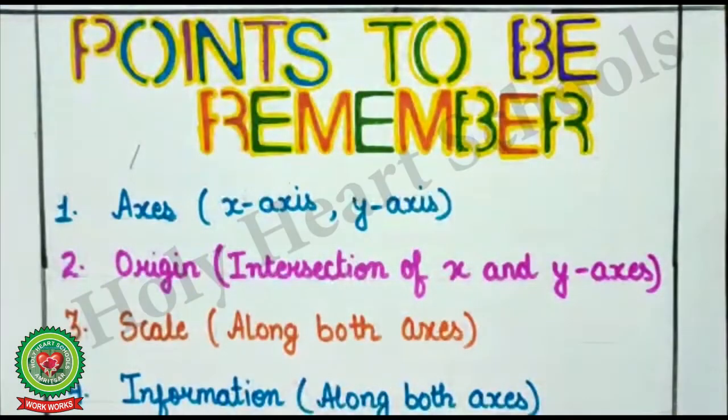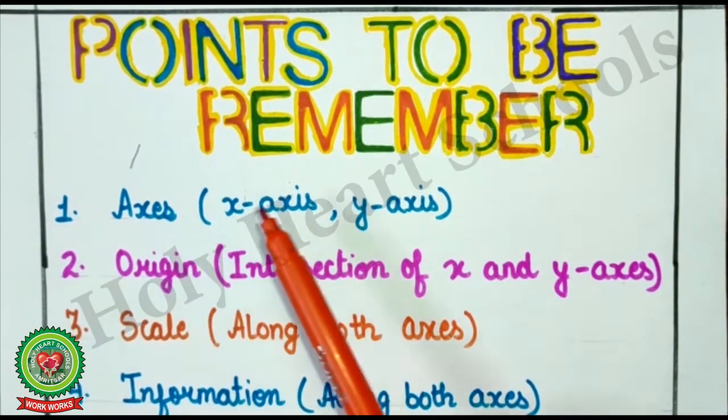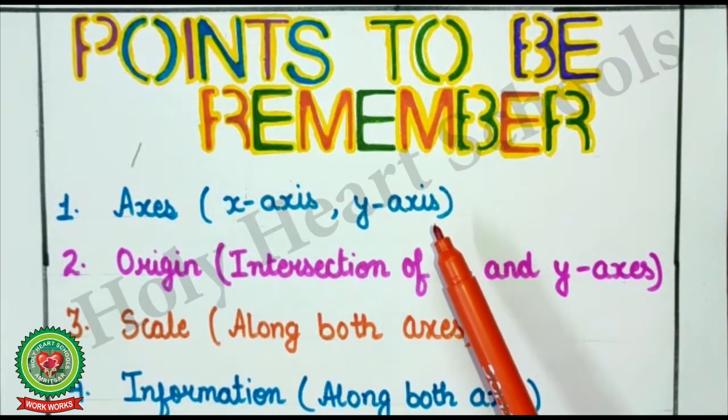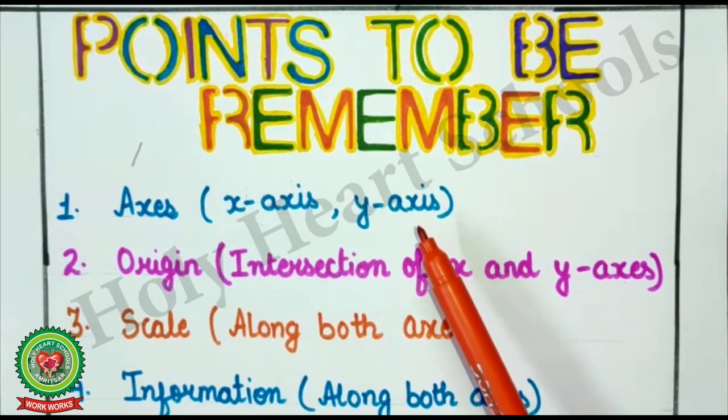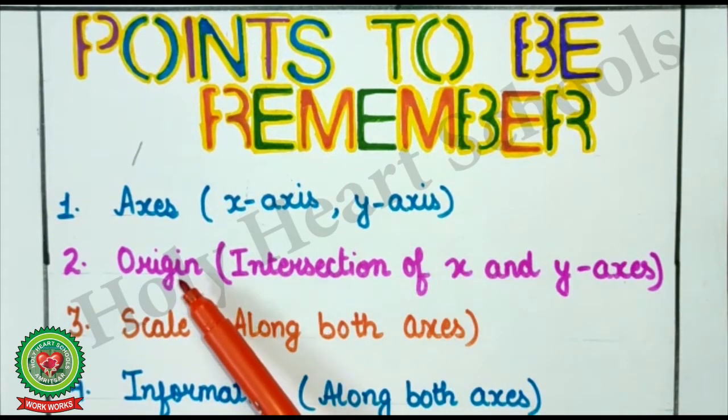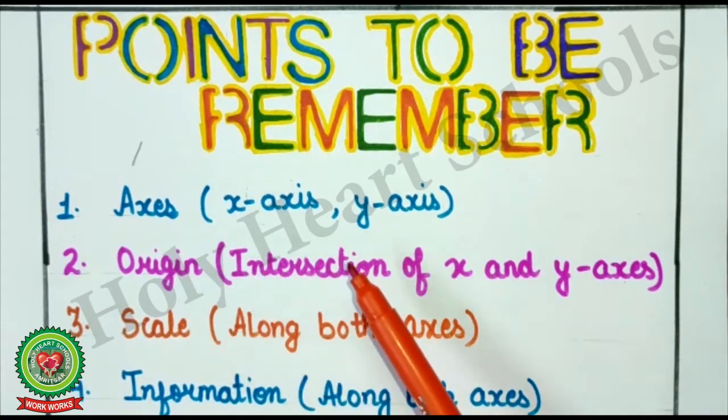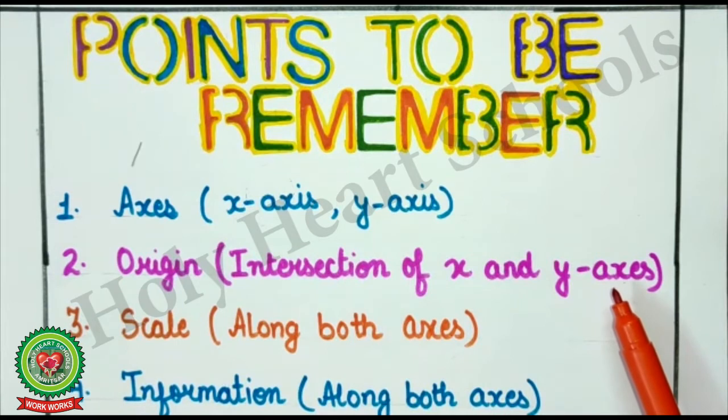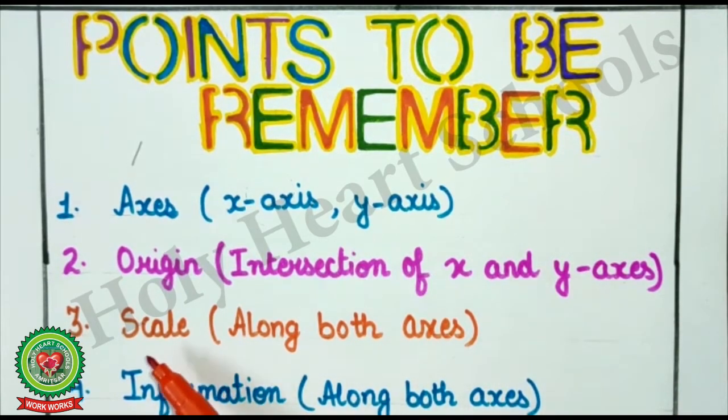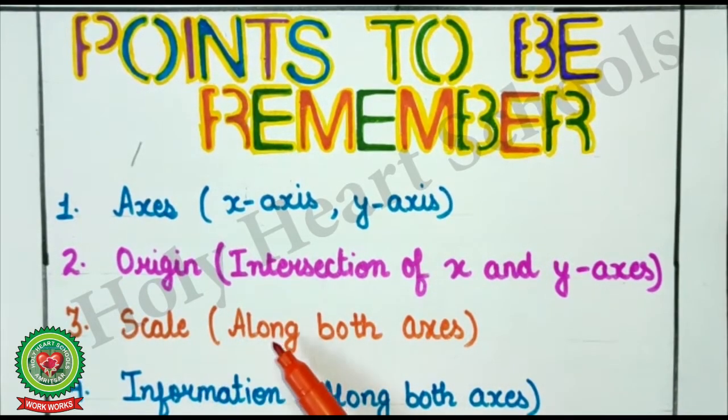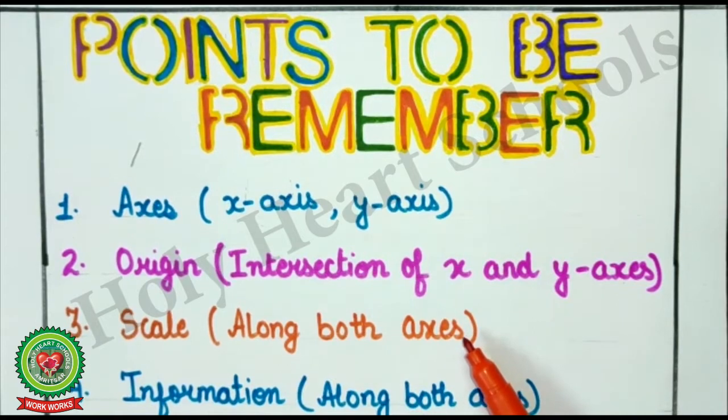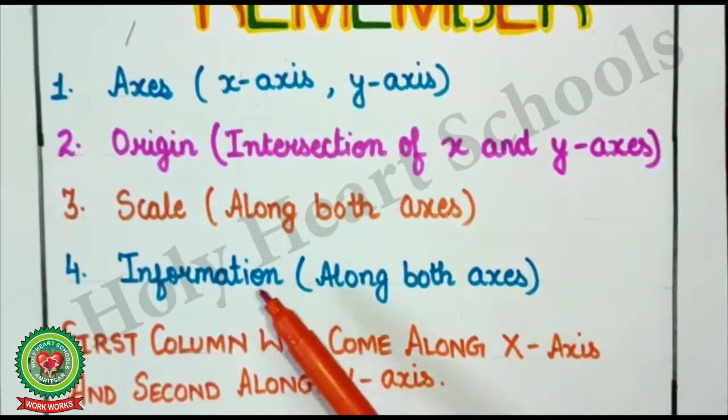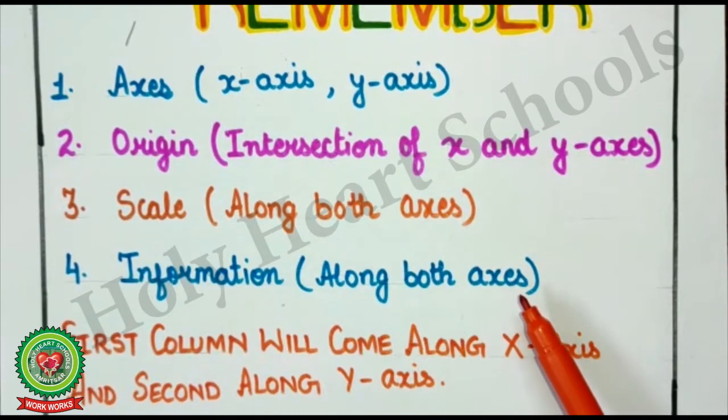Now we are having some points which you have to remember. That is, here you will draw X-axis, Y-axis. Then, mark point as origin which is the intersection point of X and Y-axis. Here, you have to select scale along both axes. And then, information along both axes.